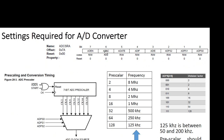Regarding the ADCSRA register, we have to set the ADEN bit to 1 to enable the ADC converter, and set the three least significant bits to 111 to set the prescaler to 128. We need to make sure the input clock to the ADC is between 50 and 200 kilohertz as given in the datasheet. Our microcontroller clock speed is 16 MHz, which divided by 128 gives 125 kHz — within the required range. So I set those three bits to 111, corresponding to a prescaler of 128.